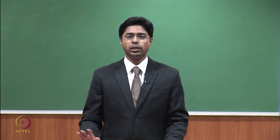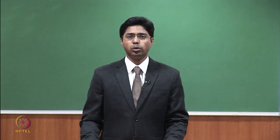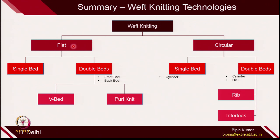Before we move further, let's have a quick recap of the technologies we have covered, because all these technologies have the potential to create different types of fabric construction. In weft knitting, we covered flat knitting technologies, where the needle bed is in the flat set. We also covered circular knitting technologies, where needle beds are in either cylinder and dial form. In flat bed, we can categorize this technology into 2 categories: single bed, where you have just 1 needle bed.